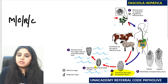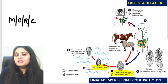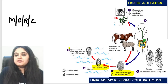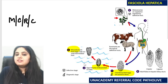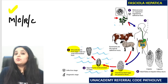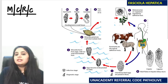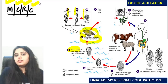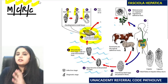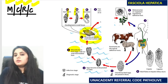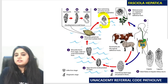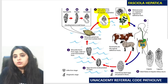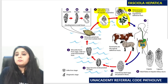Remember the mnemonic MCRC: the first thing to hatch out is the miracidium. Miracidium will hatch out and go into the first intermediate host — the snail — where CRC development occurs: sporocyst, redia, and cercaria larva. The cercaria larva then comes out of the snail.